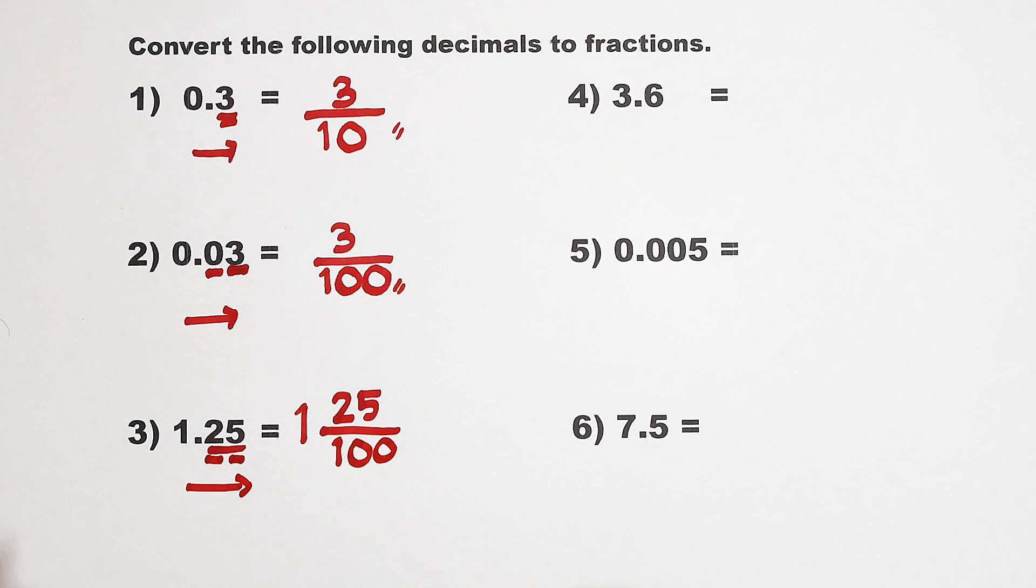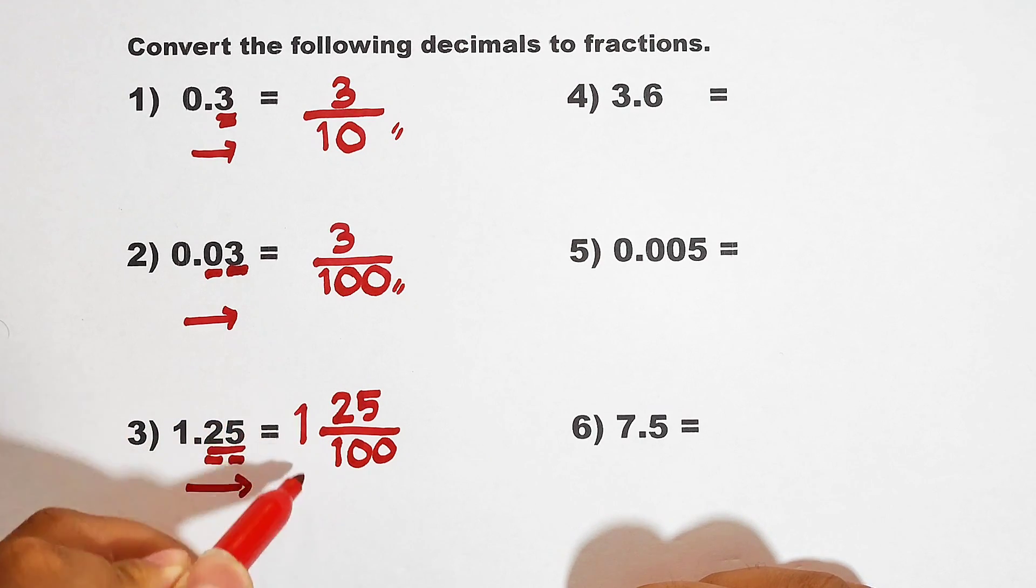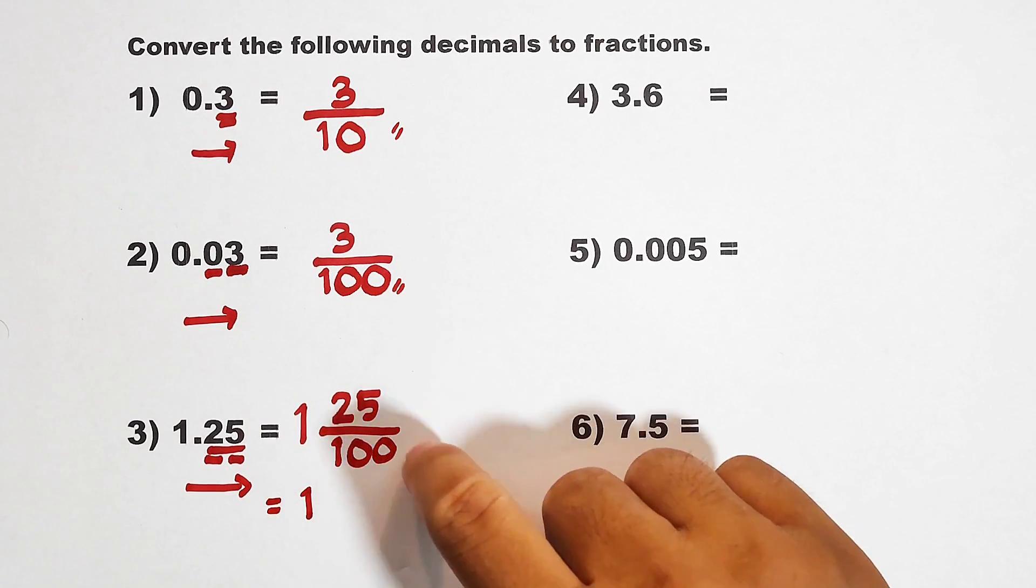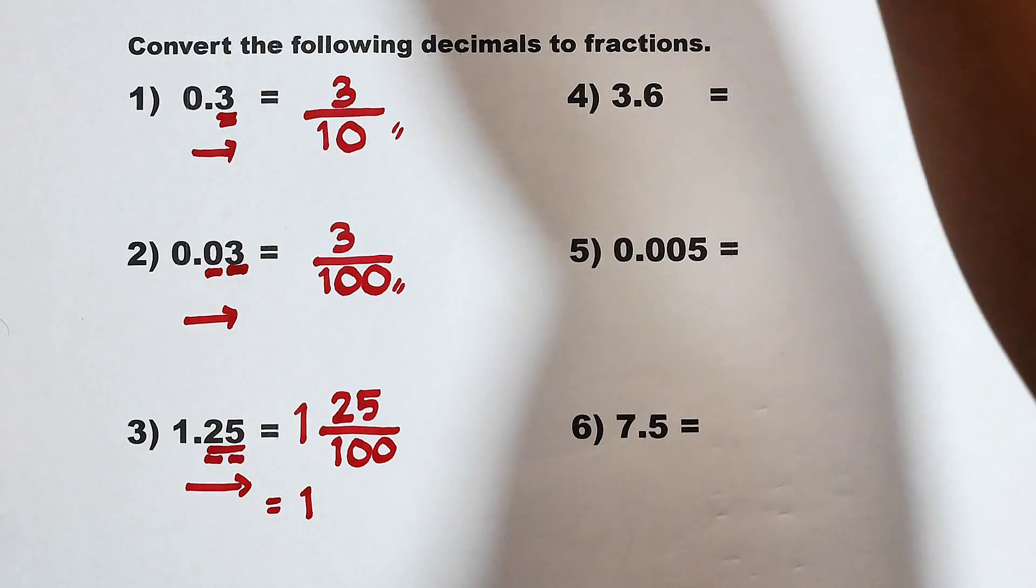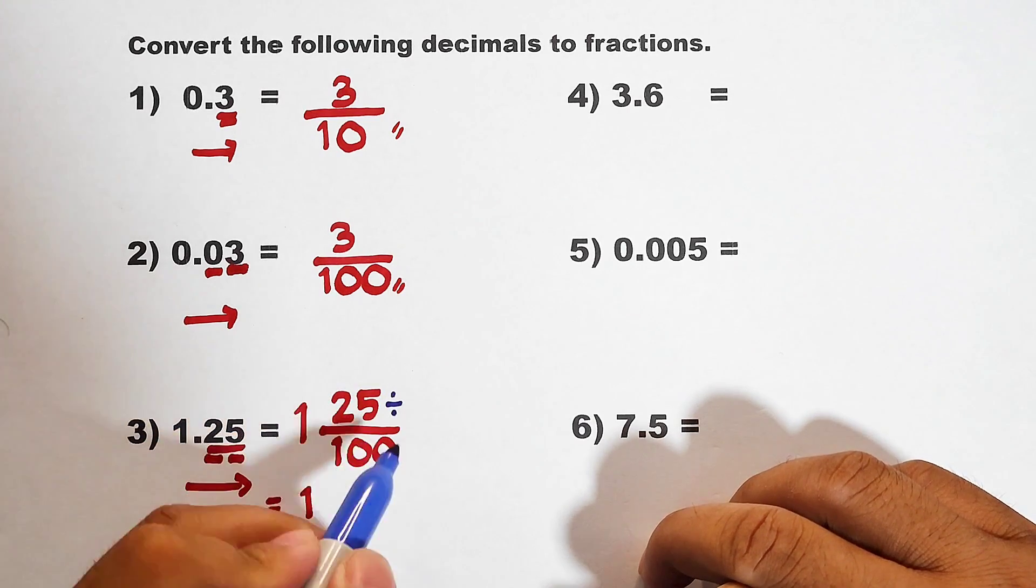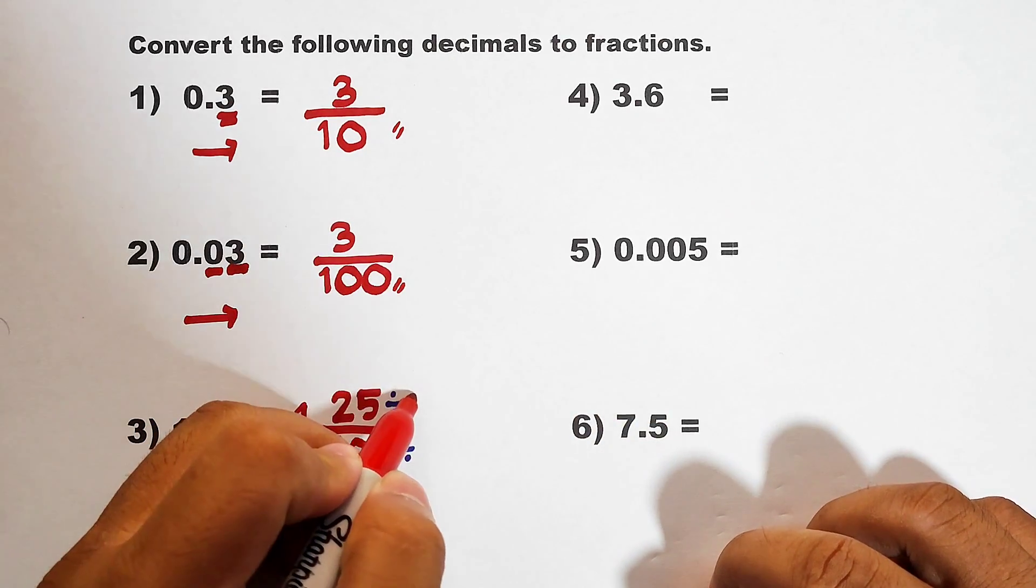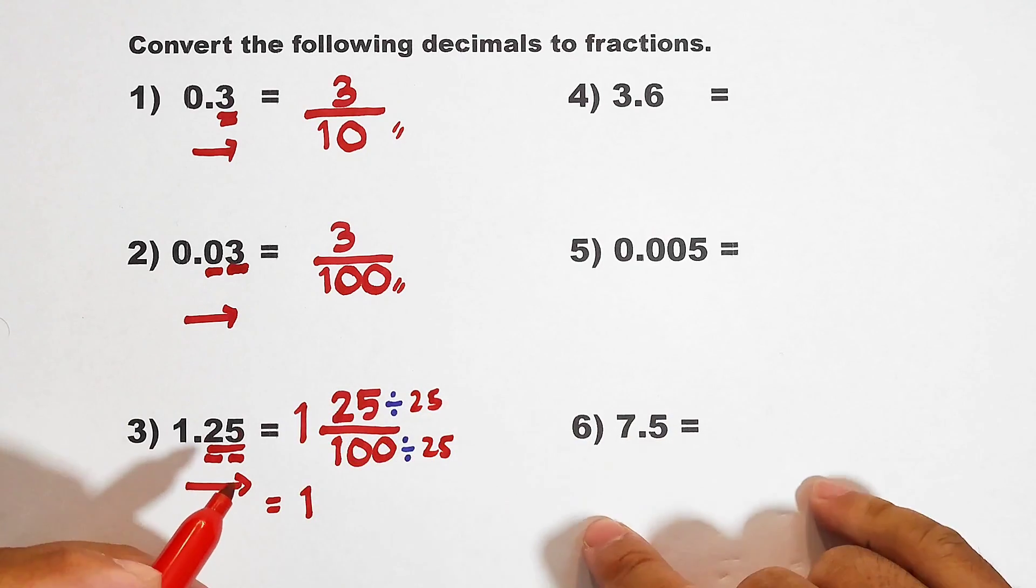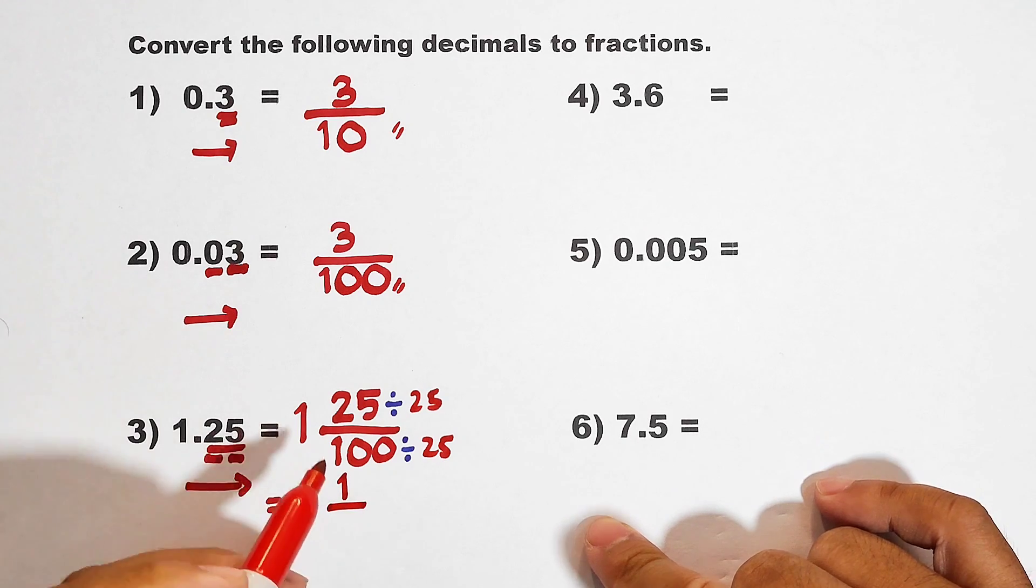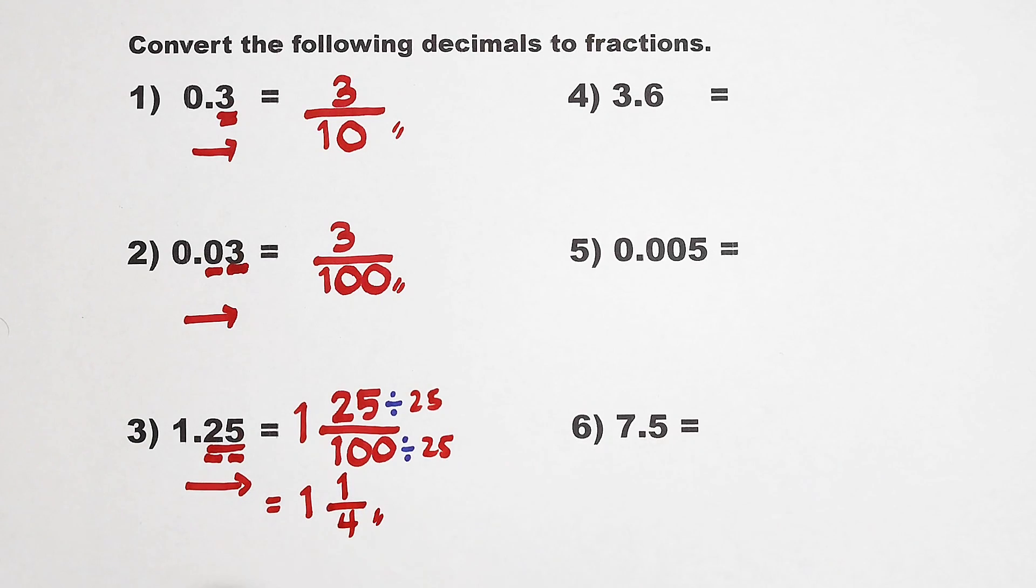Now, this one is not yet the answer because we can still simplify 25 over 100. So to simplify this, copy this whole number, 1. And then the greatest common factor between 25 and 100 is 25. Meaning, what we need to do is divide the numerator and the denominator by 25. Now let's divide. 25 divided by 25 is 1 over 100 divided by 25 is 4. And as you can see, the converted form of 1.25 is 1 and 1 over 4.